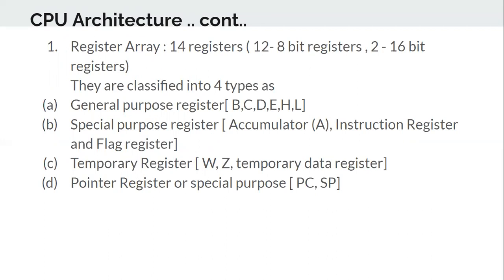For other microprocessors there may be more or fewer registers, but nowadays they have more registers. This is very basic — showing how the microprocessor looked when it first evolved and what its basic components were. The structure is essentially the same today, but with more registers and more control circuits.